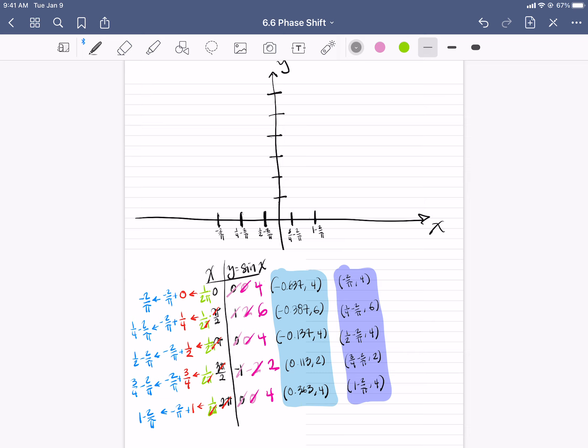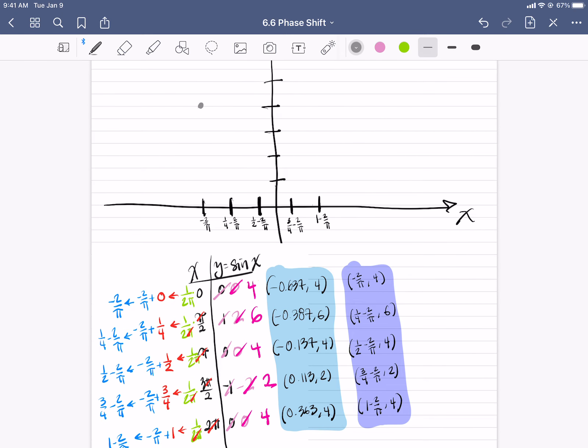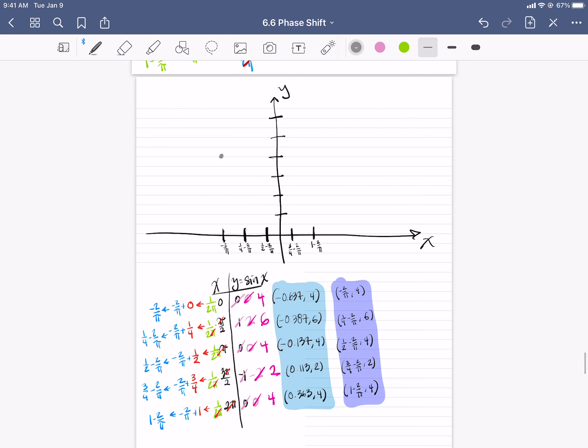So negative 2 over π comma 4. Negative 2 over π, I'm going to keep saying that because this 2 over π is not a common value. So sorry, I keep saying 2π. Then I have 1 fourth minus 2 over π is up at 6. Then 1 half minus 2 over π is up at 4. So our midline is shifted up to 4. Then I have 3 over 4 minus 2 over π is up at 2. Then I have 1 minus 2 over π is up at 4.